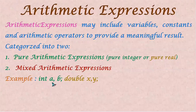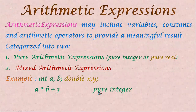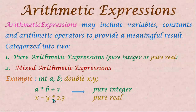Let us see an example here. A and B are integer type; X and Y are double type. If we have A into B plus 3, all these are integer type, so it is pure integer. Next, we have X minus Y into 2.3 — X and Y are double type, that is real, and 2.3 is also real, so this is pure real type.